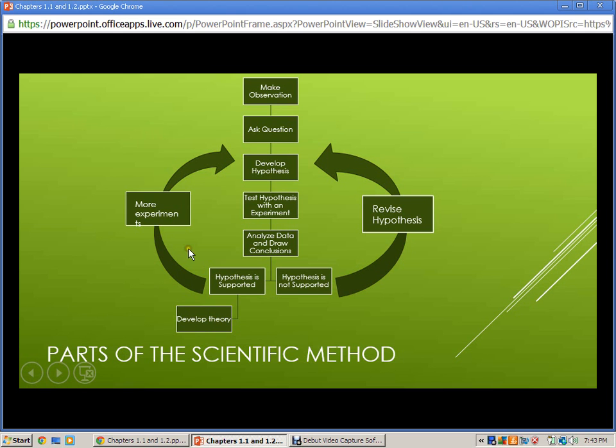Now as we go through all of these, there are some specific terms we need to know. The first term is manipulated variable. A manipulated variable is the thing that you change when you have a controlled experiment.